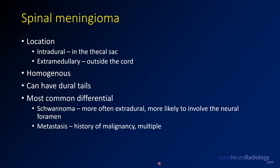This is a case of a spinal meningioma. What you have is an intradural mass — it's in the thecal sac but it's outside of the cord, so it's extramedullary. It's a homogeneous enhancing mass. They can have dural tails much like intracranial masses. The most common differential considerations are schwannoma and metastasis. To differentiate: a schwannoma more often will involve the neural foramen, with extension through it and the classic dumbbell appearance, or at least some osseous remodeling.